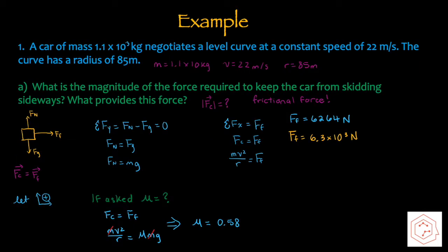Now for some examples. A car of mass 1.1 × 10³ kg negotiates a level curve at a constant speed of 22 m/s. The curve has a radius of 85 meters. Part A asks: what is the magnitude of the force required to keep the car from skidding sideways, and what provides this centripetal force? We know mass, speed, and radius. Since it's a level curve, the normal force doesn't contribute, therefore the only force providing the centripetal force is friction. When you draw the free body diagram, normal force is upwards, gravitational is downwards, and friction is the only force in the horizontal component.